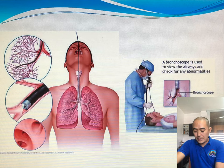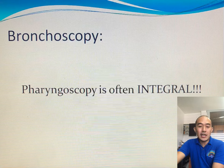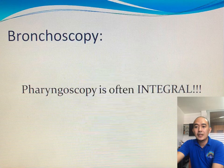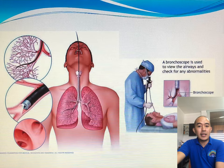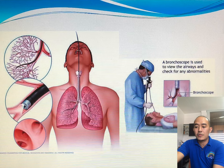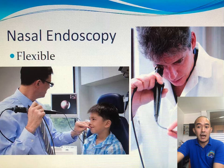Before we dive into bronchoscopy, let us talk about pharyngoscopy, because it is always being passed through the pharynx before we reach the bronchus. There are many structures to pass before reaching the bronchus, and the pharynx is one of them. When we insert a flexible pharyngoscope or flexible bronchoscope, it usually goes from the nasopharynx then hypopharynx reaching to the bronchus. The nasal cavity and nasopharynx are part of the conduit when doing flexible bronchoscopy, and this could be done by either rigid or flexible scope.